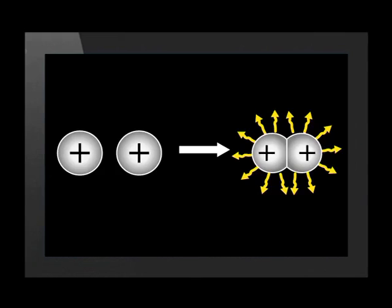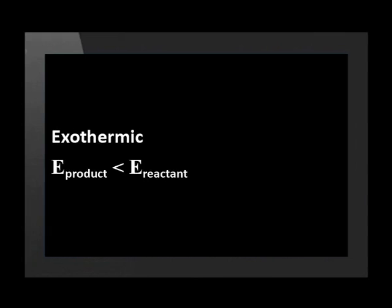We will now look at exothermic reactions. Energy is released when atoms come closer together to form a new molecule. The free atoms have a lot of potential energy that is released to the surroundings when the bond forms. The new product is now at a lower energy, and the energy of the products is smaller than the energy of the reactants. So for exothermic reactions, the heat of reaction, delta H, is less than zero — that is, it is negative.